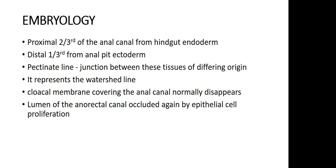As we all know, during the fourth week of intrauterine life, the primitive gut is derived from the endoderm, which is divided into foregut, midgut, and hindgut. The proximal two-thirds of the anal canal is derived from the hindgut, which is endodermal in origin. The distal one-third of the anal canal is ectodermal in origin — that is the anal pit, or proctodeum.